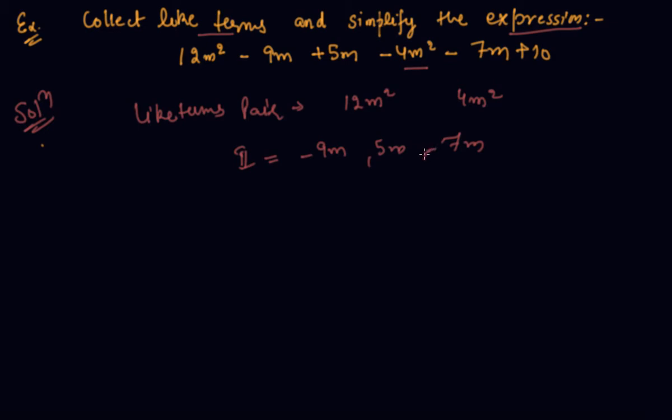So now what we will do, we will add or subtract the like terms aside. Means this is 12m² - 4m². 1m². m² - 9m + 5m - 7m and another constant term which is a single term here.